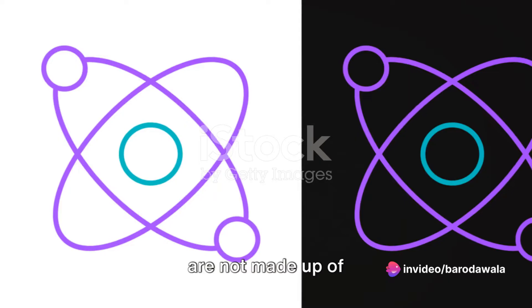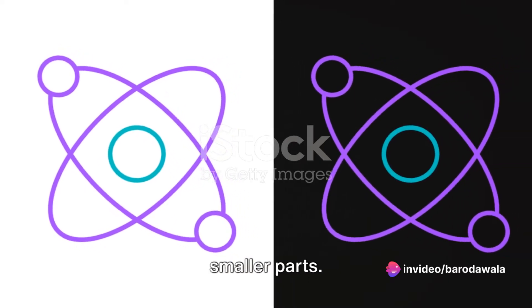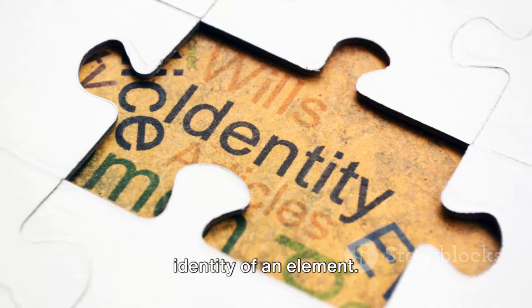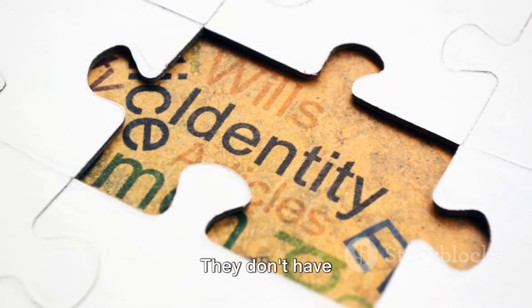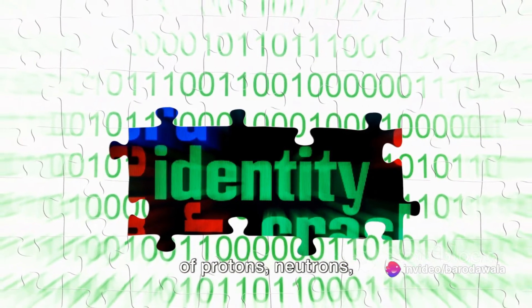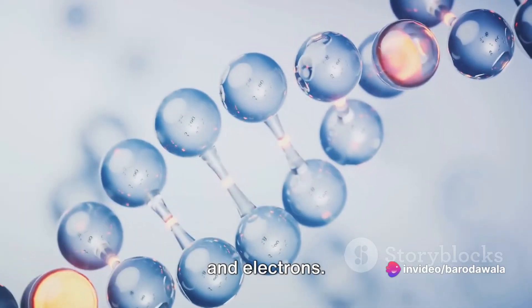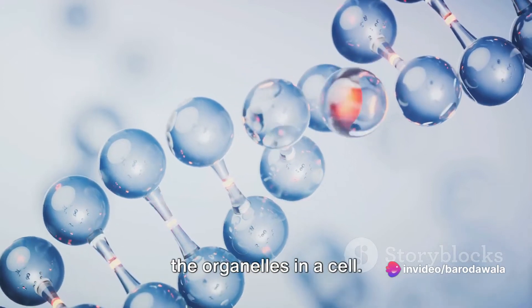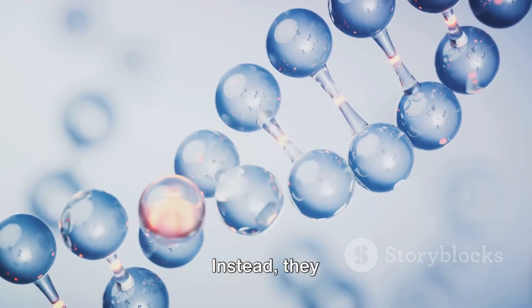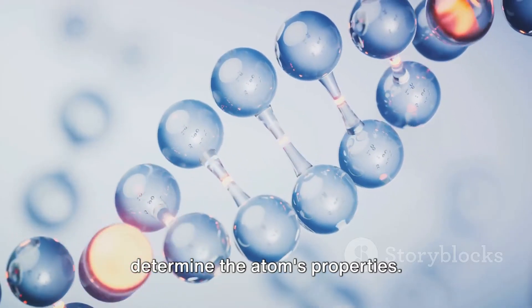Unlike cells, atoms are not made up of smaller parts. They're the fundamental pieces of the universe, the smallest unit of matter that retains the identity of an element. They don't have specialized structures like organelles. Instead, they consist of protons, neutrons, and electrons. But these aren't like the organelles in a cell. They don't carry out specific functions. Instead, they determine the atom's properties.